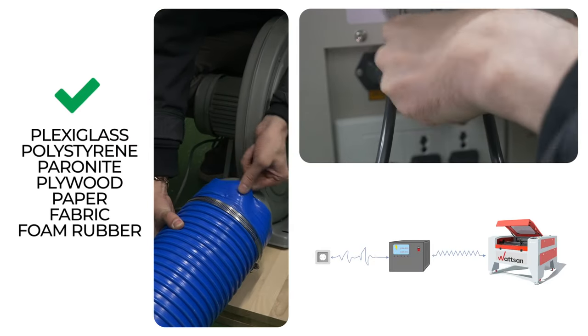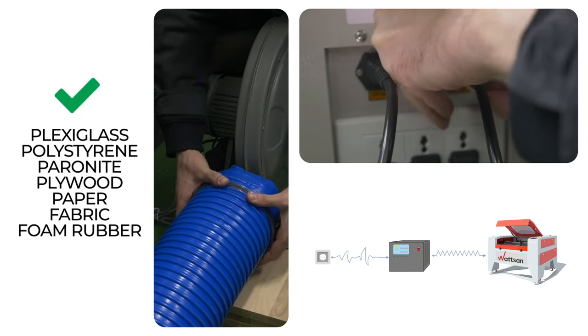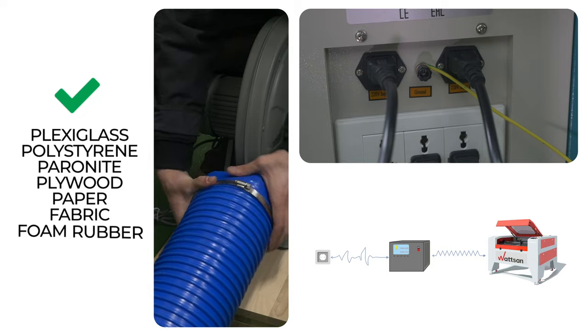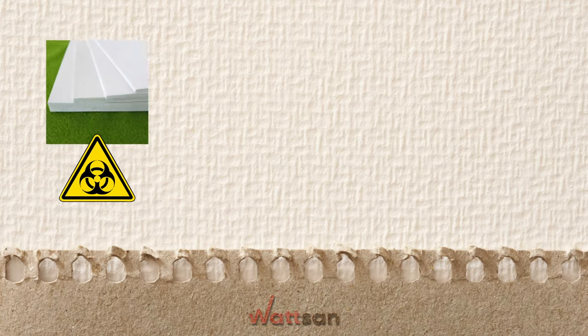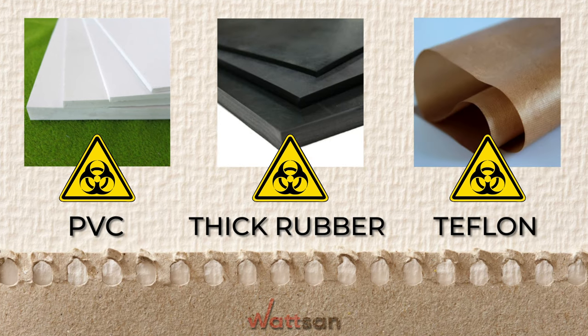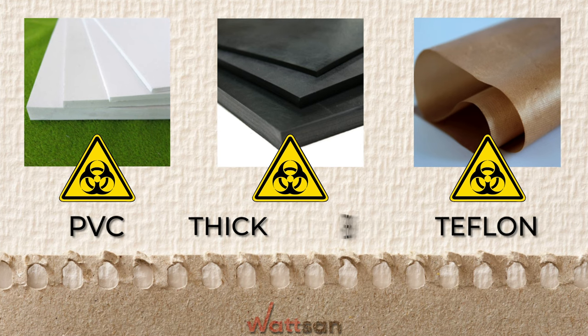The main things to pay attention to are grounding, fume extraction, a voltage regulator, and processing the right materials. It is not recommended to cut PVC, thick rubber, and Teflon on CO2 laser machines, as the vapors occurring during cutting these materials are toxic.